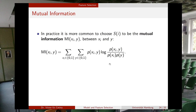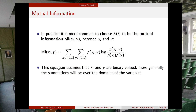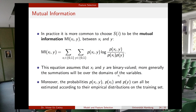These probabilities can be estimated from the dataset by counting how many times feature i occurs at the same time as label y equals one, across all combinations of xi and y. This can be very easily implemented by counting the number of cases in which each variable takes values zero or one. More generally, the summations are over the domains of the variables, and the probabilities can be estimated from their empirical distributions on the training set.